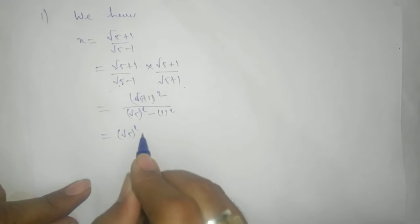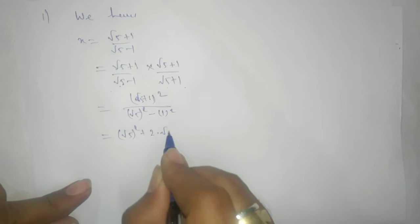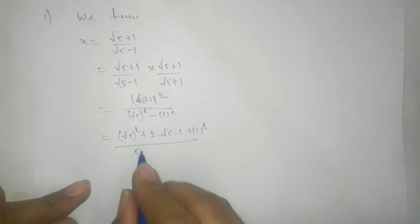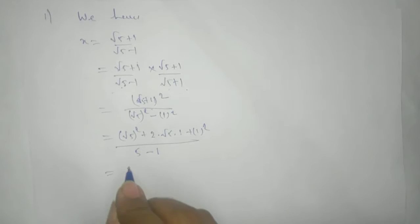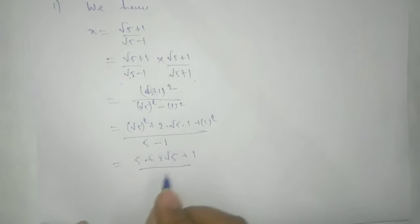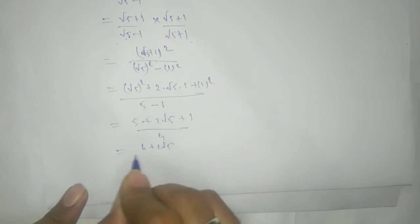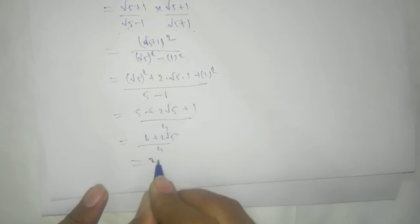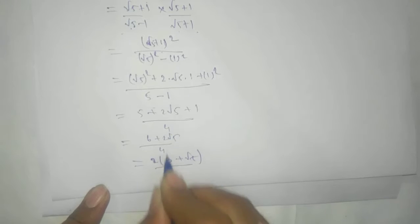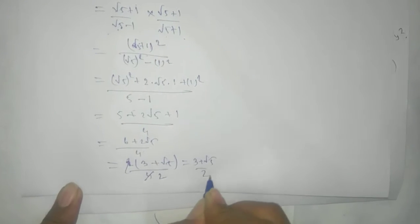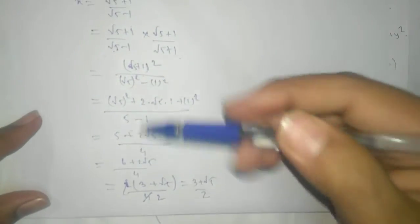So we can write (root 5 + 1) whole square in the numerator using the formula a squared plus 2ab plus b squared. The denominator gives root 5 times root 5 = 5, and 1 squared = 1, so the denominator is 4. The numerator gives 6 plus 2 root 5. Taking 2 as common, we get 3 plus root 5 by 2. That's the process for x, but you don't need to show each and every step.